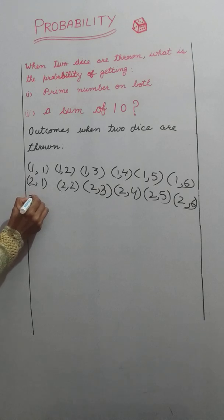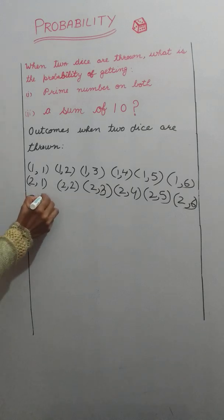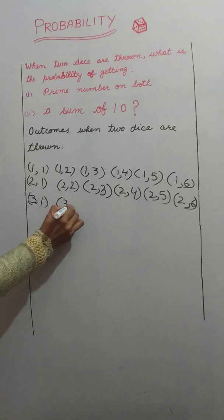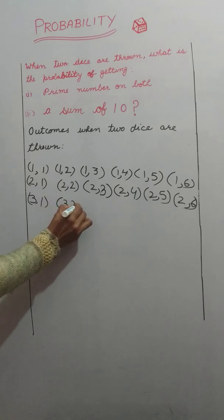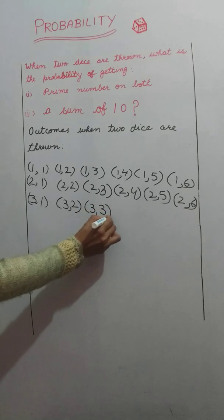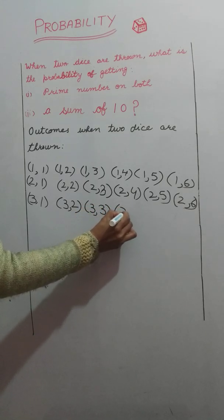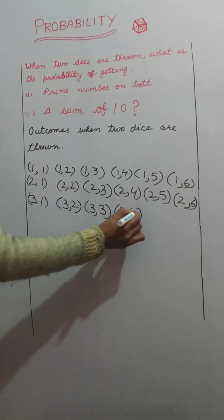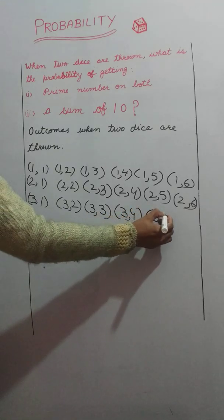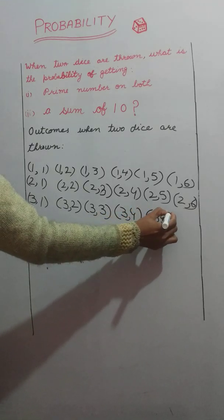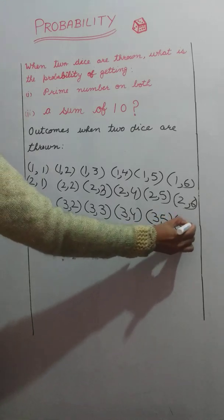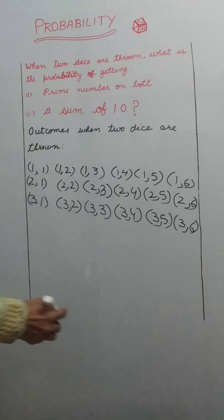It may also be 3 on the first die and 1 on the second; 3 and 2; 3 and 3; 3 and 4; 3 and 5; 3 and 6.